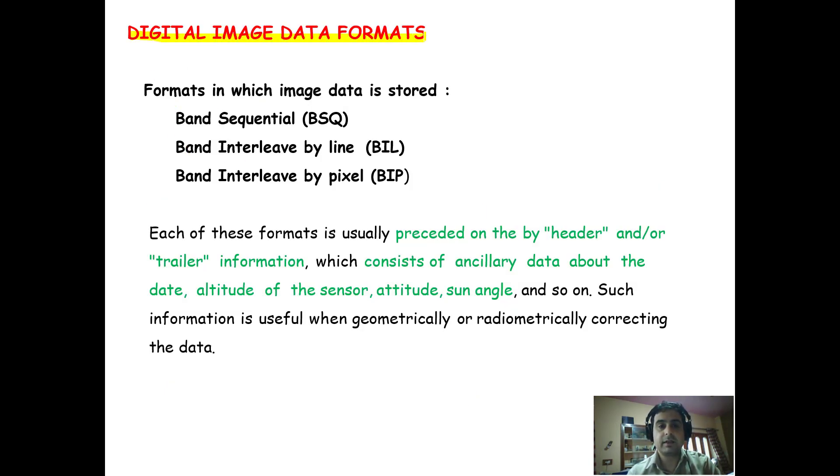Now, what are the different digital image data formats in which the data is stored? First is the band sequential format, then band interleave by line format, then band interleave by pixel format.